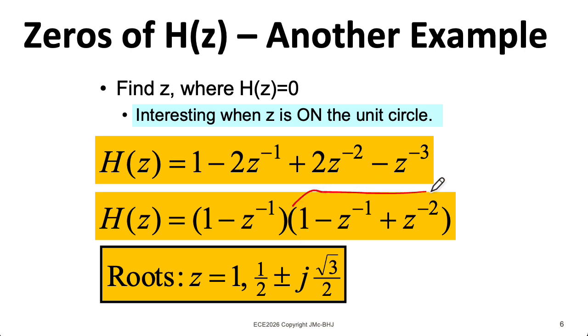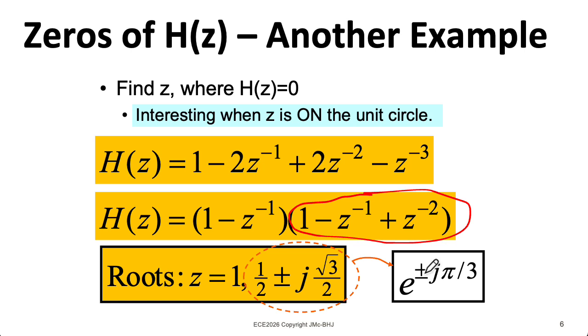Now assuming that your impulse response is real valued, you'll always have this structure where if there are complex zeros, they'll show up as complex conjugate pairs. The same principle will hold for poles. So here we have 1 half plus or minus j square root of 3 over 2. And we can get that by applying the quadratic formula to this after multiplying everything by z cubed. Now converting this to polar form, we see that we have angles of plus or minus pi over 3, but the magnitude is 1. So these zeros all lie on the unit circle.